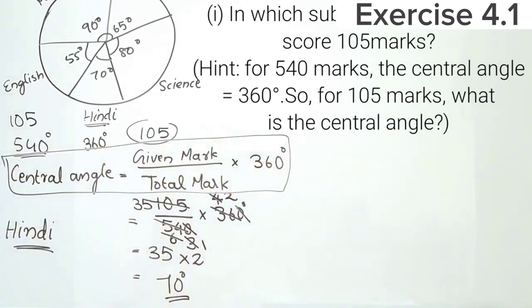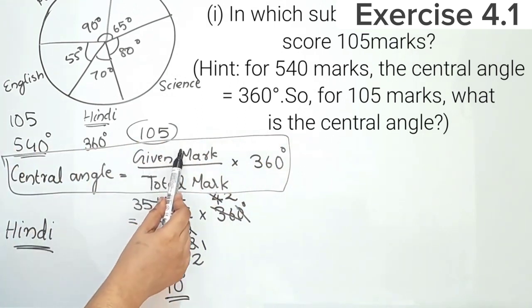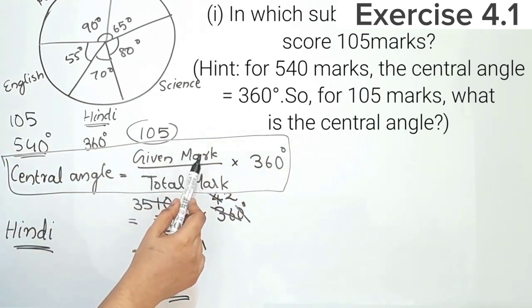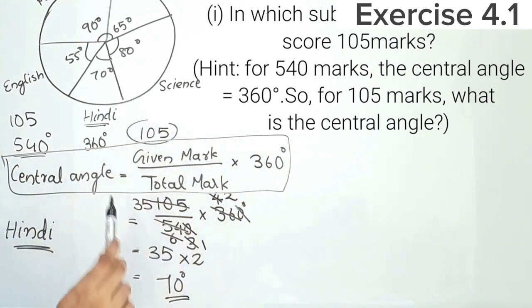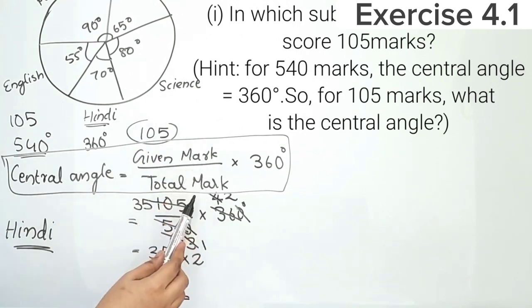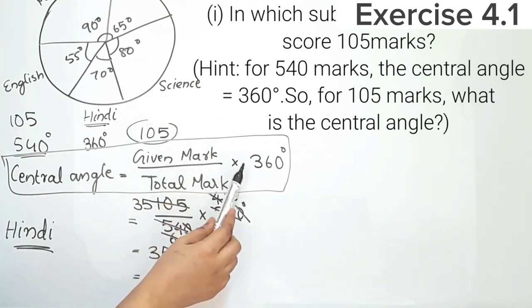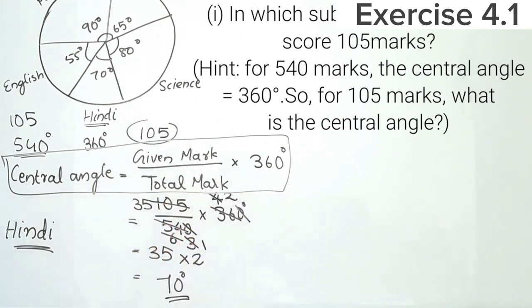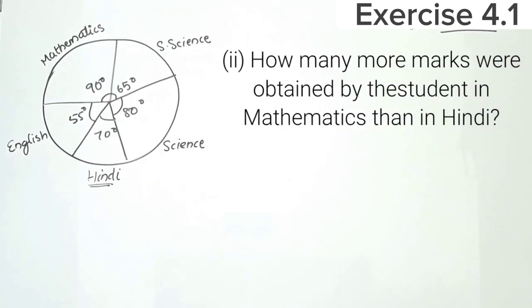The central angle formula is: given mark divided by total mark, into 360 degrees. Now, second question: how many more marks were obtained by the student in mathematics than in Hindi?